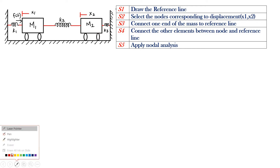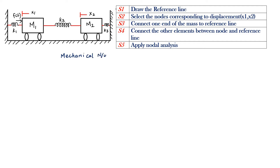First of all, I am going to explain how to draw the mechanical network. Step number one is to draw the reference line. Then select the nodes corresponding to the displacement X1 and X2. Two displacements are there, so corresponding to the two displacements we have to select two nodes, that is X1 and X2.